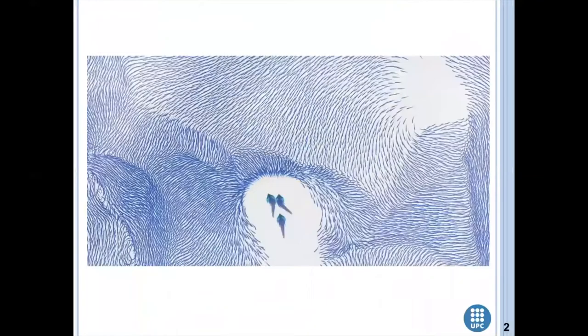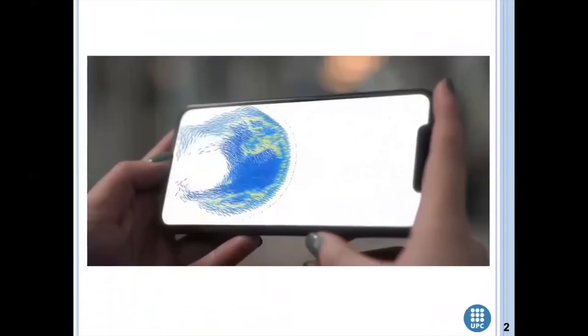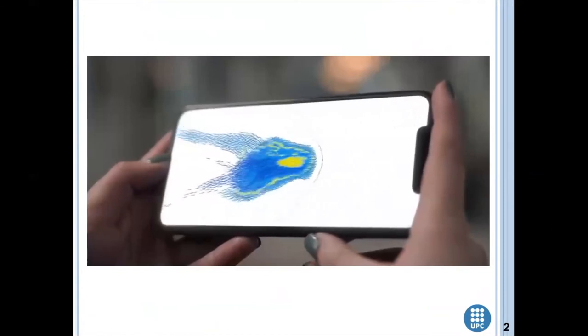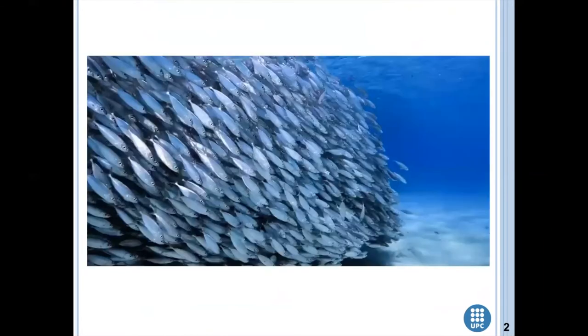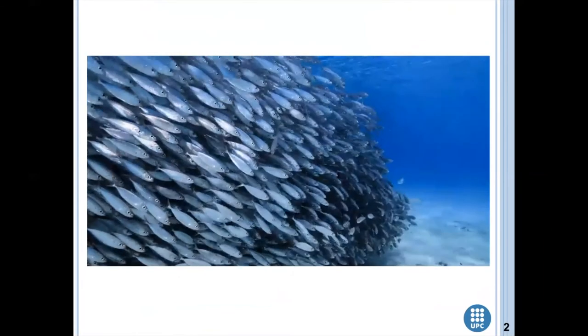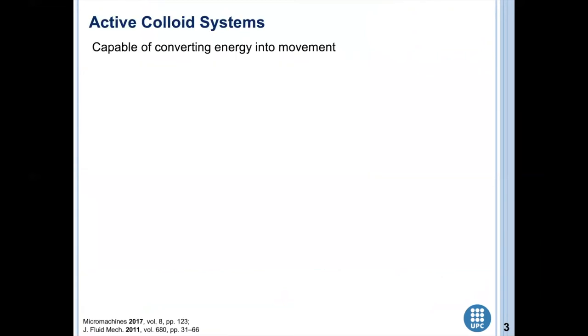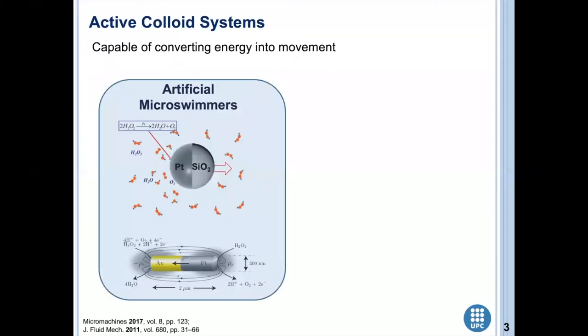There are different active systems in our surroundings, like groups of birds, fish, particles, animations that we have seen even in video games. Active systems, and specifically active colloid systems, are the ones capable of converting energy from the near environment into movement. These active systems are classified in two.